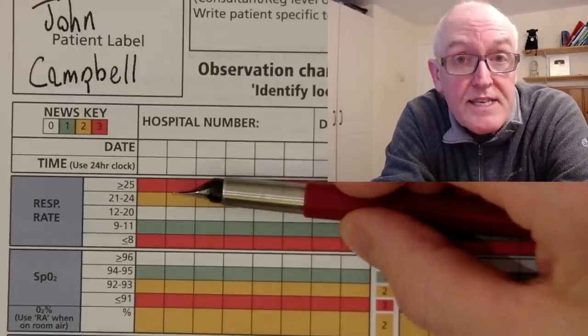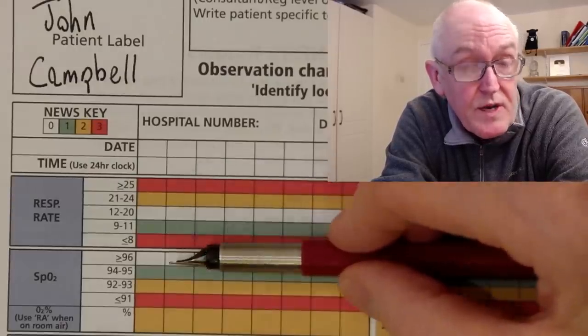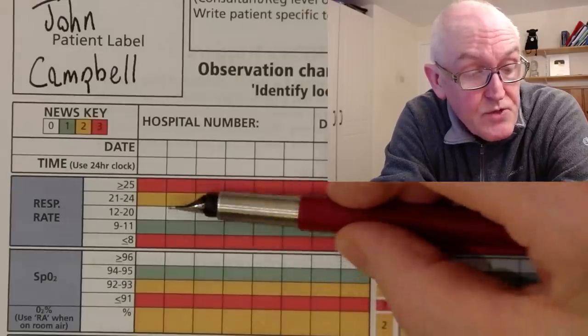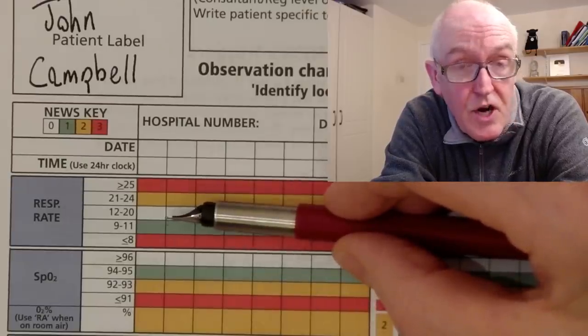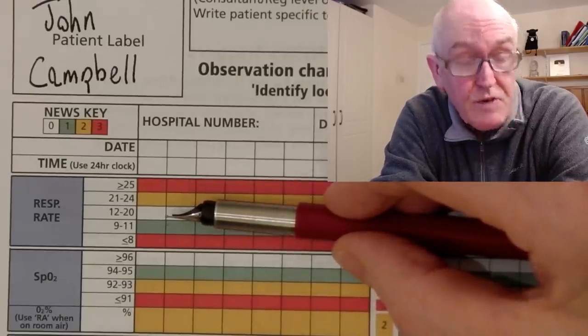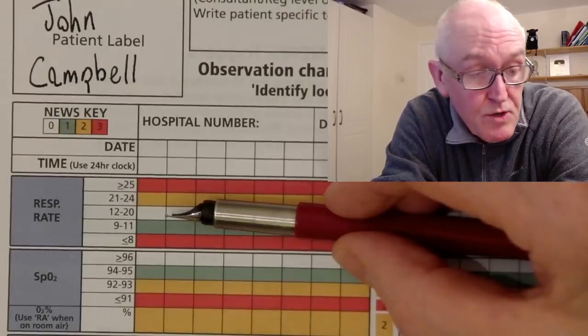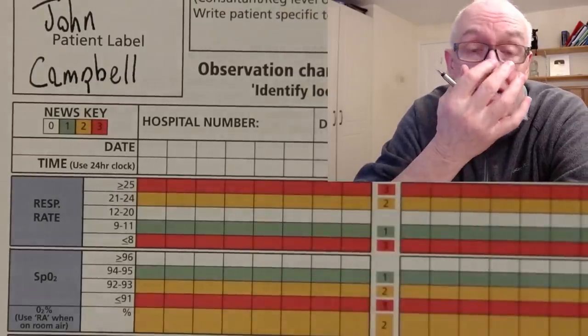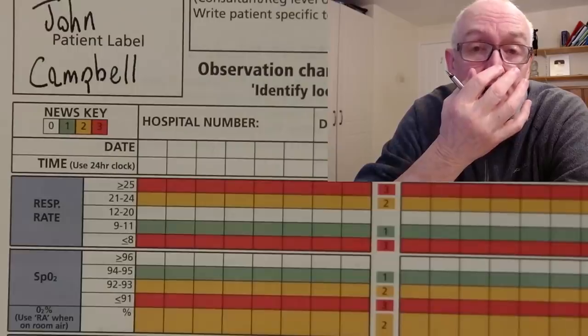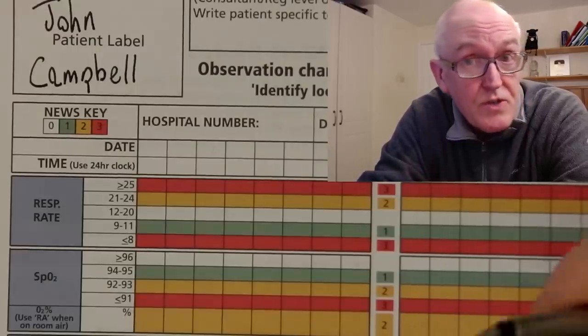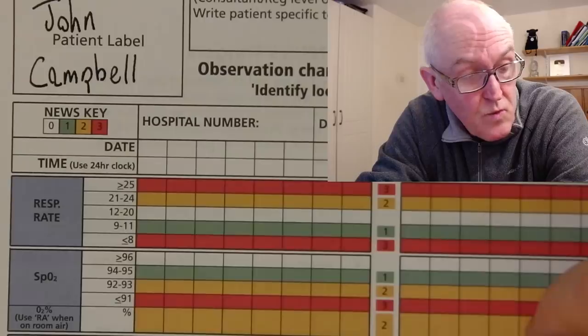If it's fast we call it a tachypnea, if it's low we call it a bradypnea. You can learn to count those at home just practicing, watching people, watching their chest move, feeling the air in your hand over their mouth, and the other one that's really useful is watching their abdominal movements as well.